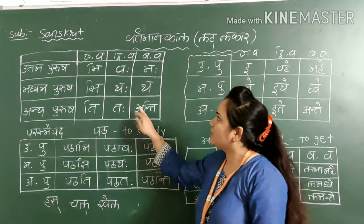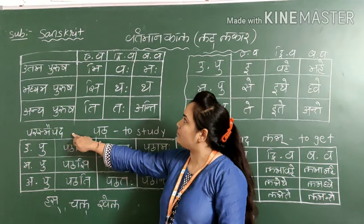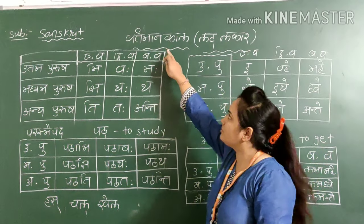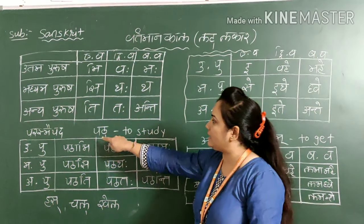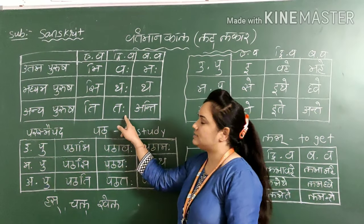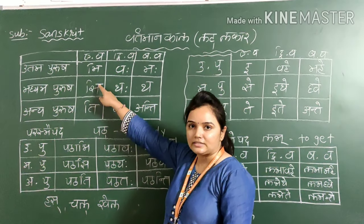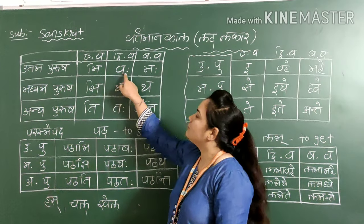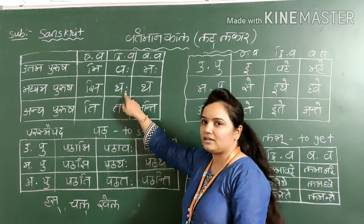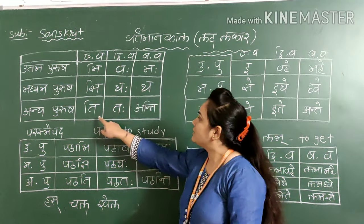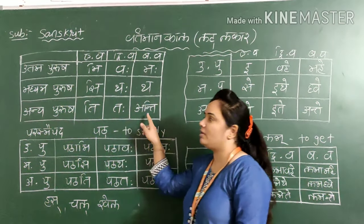Now, this table is of Parasmapad Vartaman Kaal, meaning Parasmapad Lat Lakar table. This is the format of the table. We will start like this: mi, vaha, maha, si, thaha, thaha, ti, thaha, anti. This is the table of that.